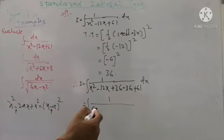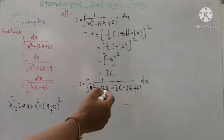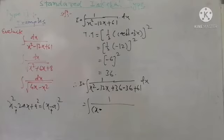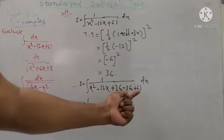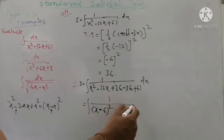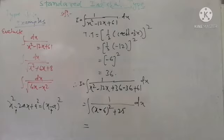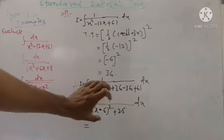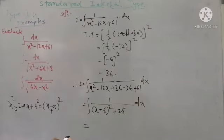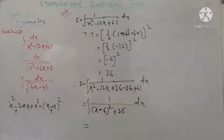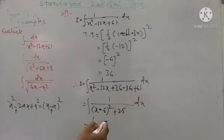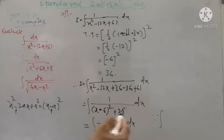We convert these three terms into a perfect square: square root of first term is x, sign of second term is minus, square root of third term 36 is 6, so we get (x - 6)². The remaining constant: -36 + 61 = +25. So the integral is now 1 upon (x - 6)² + 25. We express 25 as 5², making this in the form x² + a².